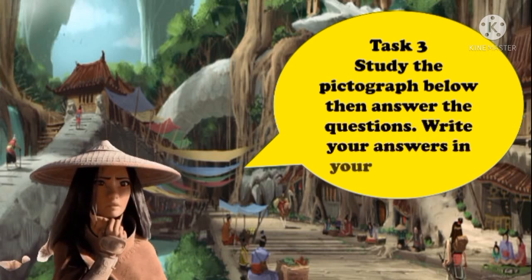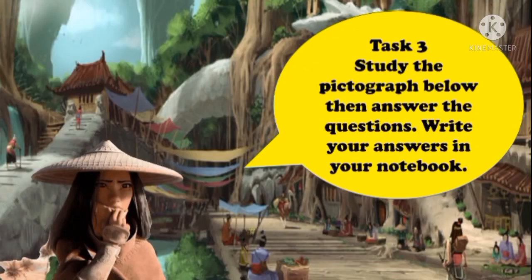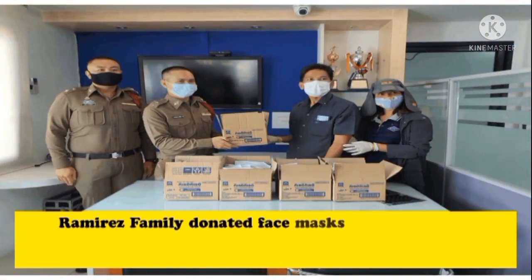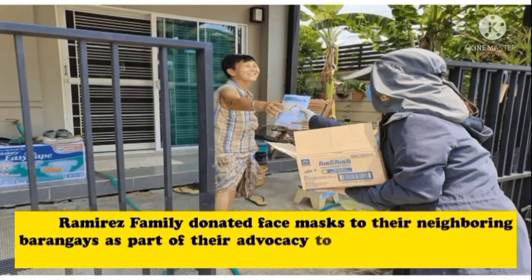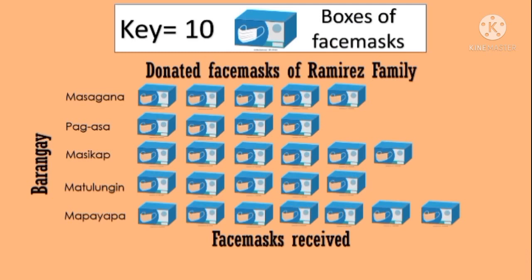By the way, the graph presented a while ago is what we call a bar graph. We will move on to Task 3 — study the pictograph and then answer the following questions. Write your answers in your notebook. The Ramirez family donated face masks to their neighboring barangays as part of their advocacy to prevent the spread of the virus. This pictograph shows the donated face masks of the Ramirez family. The key here is: one box picture is equivalent to ten boxes of face masks.